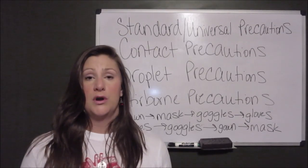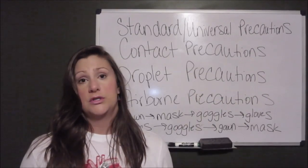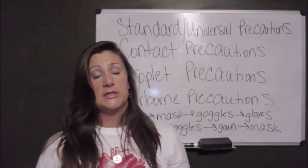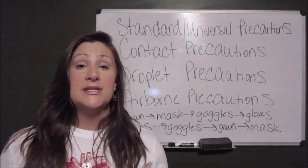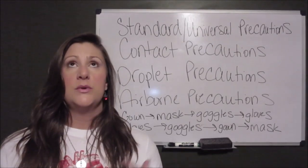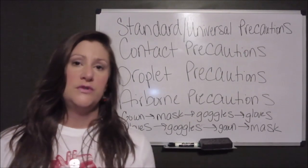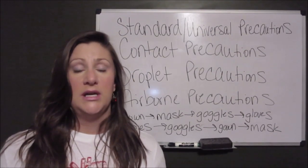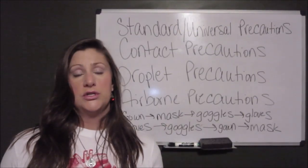Isolation Precautions. There are 4 levels of precautions. Number one: Standard or Universal Precautions. We apply standard precautions to every patient. As a nurse, you have to take care of every patient like they have something that you don't want.